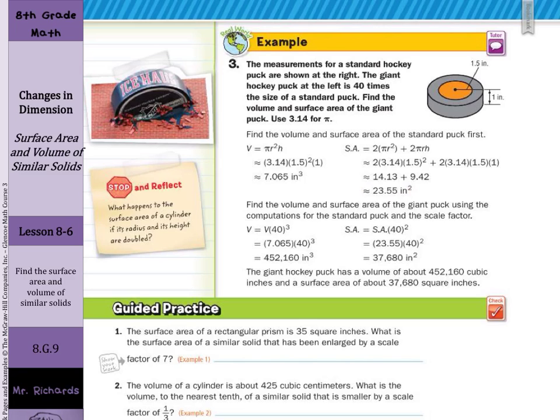And once you get those, to compare the volume, then you are going to take a scale factor of 40 cubed and multiply. For the surface area, 40 squared and multiply. And that is it for this lesson on changes in dimension. Good luck!